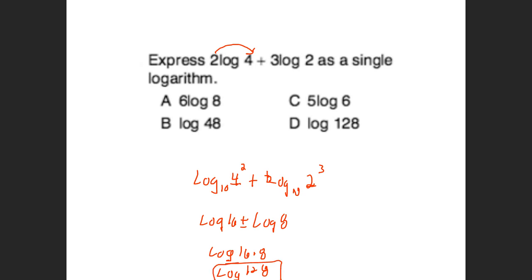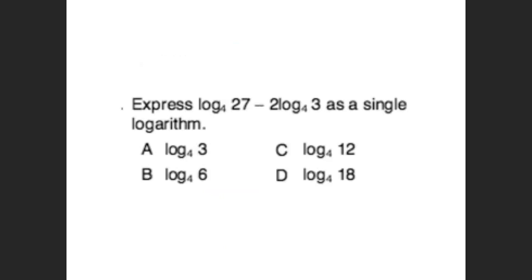Step-by-step process. Just make sure you rewrite it as a single logarithm in simplified form. In the next problem there's a minus sign, so I'm going to divide. Log base 4 of 27 divided by 9 — because 3 squared is 9 — gives log base 4 of 3. Simplify. If you can condense logs, next week's assignment will be so much easier. If you can't, next week is going to be way harder.